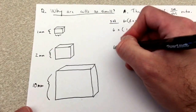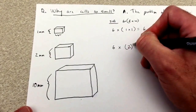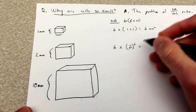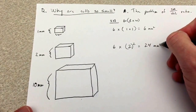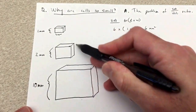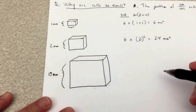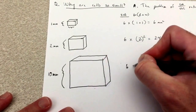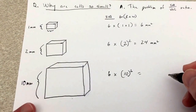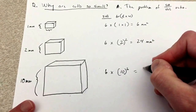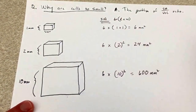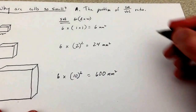For the two millimeter cube, it's six times two times two — or six times two squared — which gives us six times four, equals 24 square millimeters. That's the total surface area for that entire cube. Now for the much larger cube, it's six times ten squared, which gives us a total surface area of 600 millimeters squared.